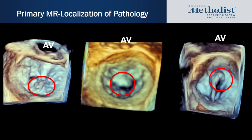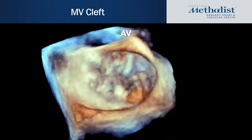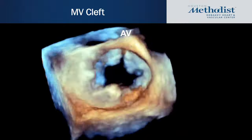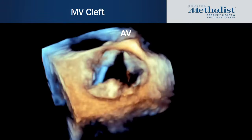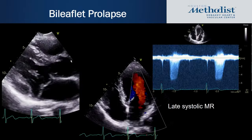3D TEE can be very helpful in localizing the pathology — for example, identifying a P2 flail, an A2 flail, or an A3 flail. Sometimes it's obvious by 2D, but 3D imaging adds value in localizing lesions. Another use of 3D imaging is in mitral valve clefts, which can be difficult to explain by 2D. When you see mitral valve clefts, always think about endocardial cushion defects and look for primary ASDs.